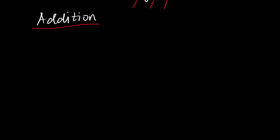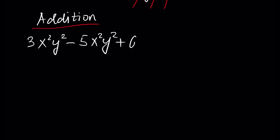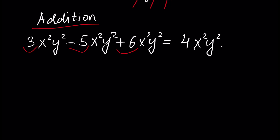Assume we have 3x squared times y squared, minus 5x squared times y squared, plus 6x squared times y squared. Three of these monomials are the same and only coefficients differ. So, we have 3 of monomial minus 5 of monomial plus 6 of monomial. So 3 minus 5 is minus 2, minus 2 plus 6 is 4. The answer will be 4 times x squared times y squared.